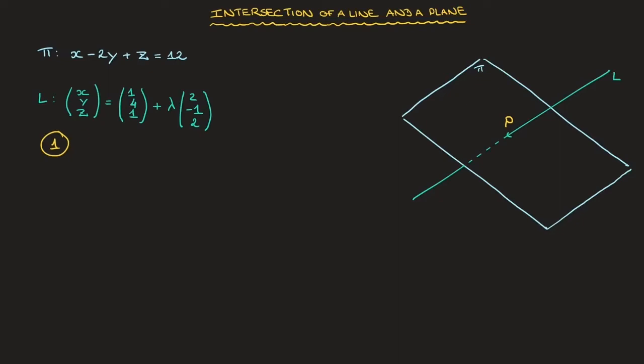So, in parametric form, this line leads to three equations. The first being x equals 1 plus 2 lambda, the second would be y equals 4 minus lambda, and the third would be z equals 1 plus 2 lambda. So, let me quickly write that. x equals 1 plus 2 lambda, y equals 4 minus lambda, and z equals 1 plus 2 lambda. Those are our three parametric equations.